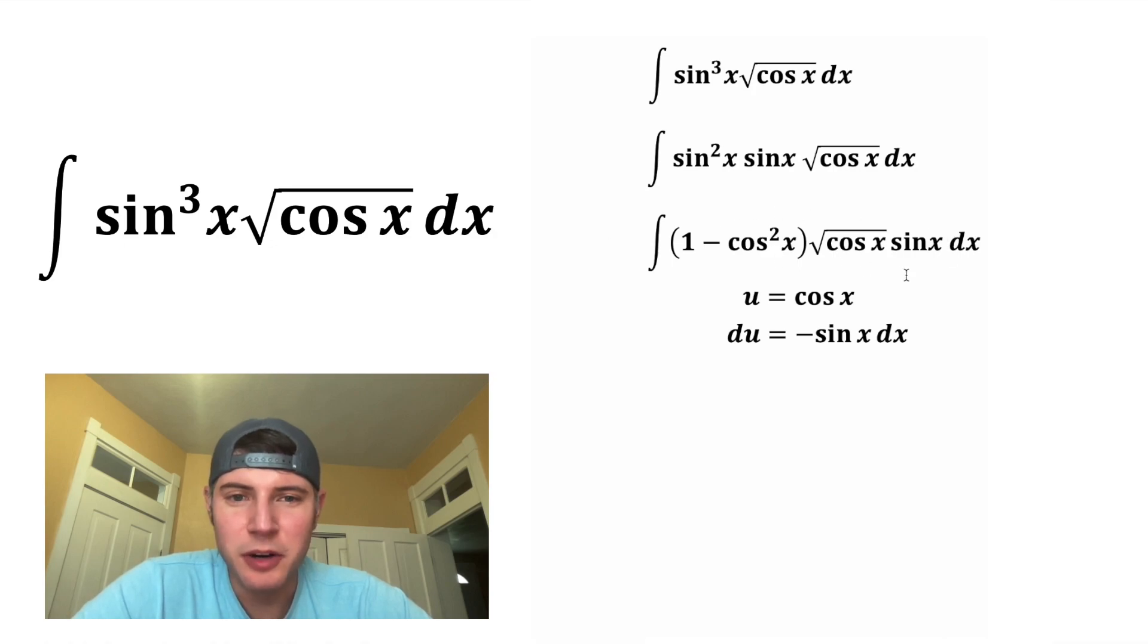There is no negative anywhere in here. It's just positive sine x dx, so let's divide both sides by negative one. And that gives us the sine x dx that we have right here. And then this left side will be negative one. So now we're ready to substitute.